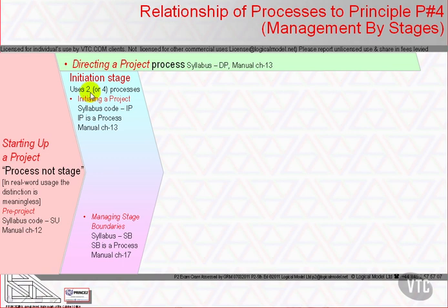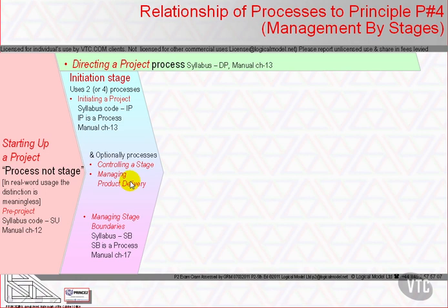The third element is the initiation stage, which uses two processes: Initiating a Project (syllabus code IP, manual chapter 13) and Managing Stage Boundaries (syllabus code SB, manual chapter 17). If the initiation stage is sufficiently complex, we may also use Controlling a Stage and Managing Product Delivery to control its internal operation — in which case the initiation stage uses four processes.